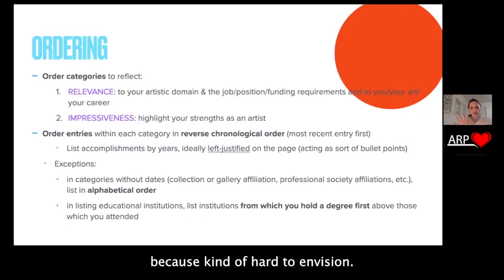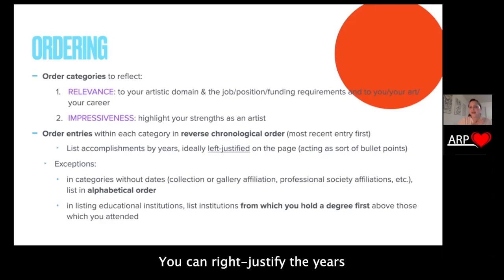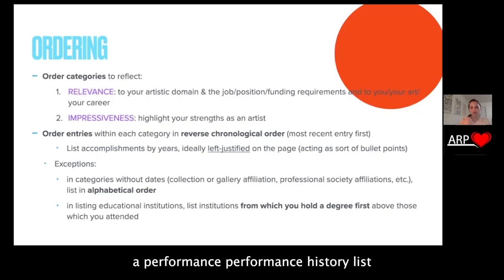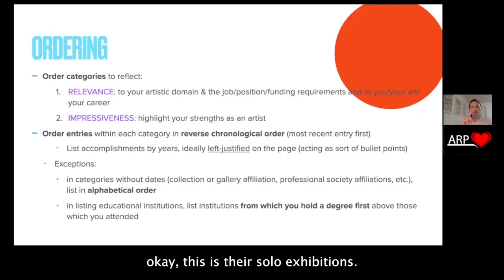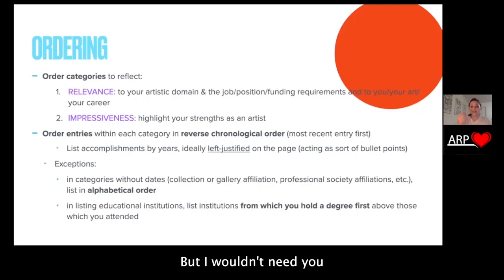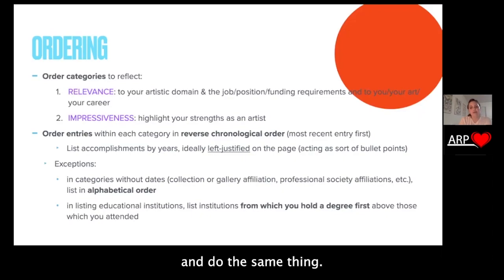I'll show you what this looks like in a minute because it's kind of hard to envision. This is not a hard and fast rule — it's a personal preference. You can right-justify the years and that's perfectly fine. But if I were looking at a resume and looking at a performance history list or an exhibition list, it'd be really easy to see at a glance: they had one in 2019, 2017, 2013 — and immediately see right off the bat what you've done, without even really needing to look at the details.